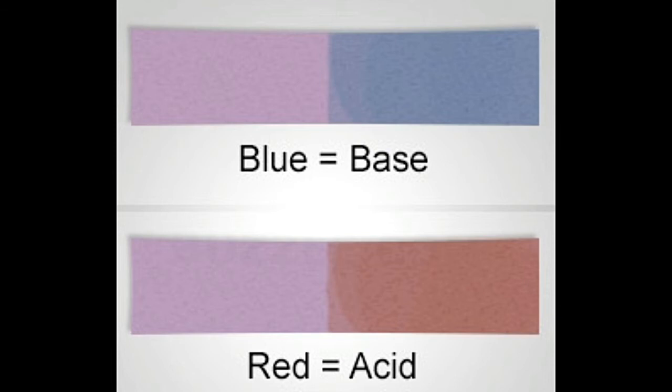The litmus test is one of the easiest and most basic tests of chemistry. An age-old remedy, litmus was first used around 1300 CE by the Spanish alchemist Arnaldus de Villanova.